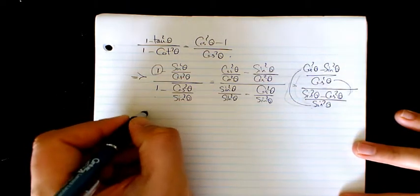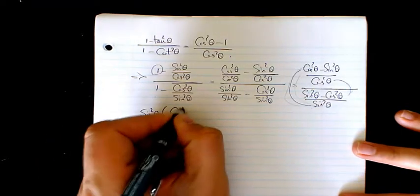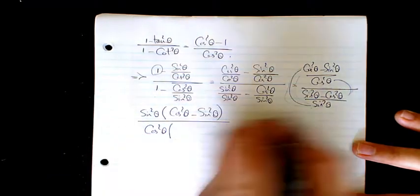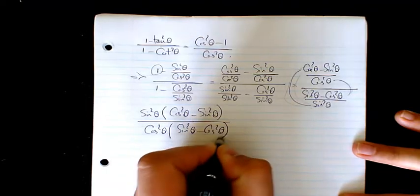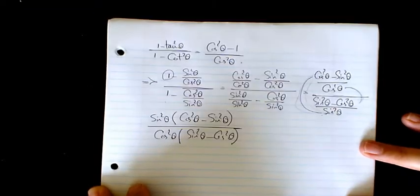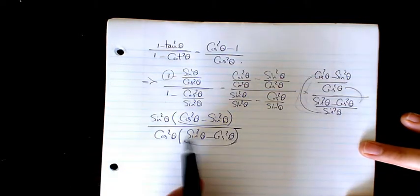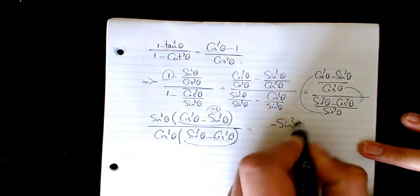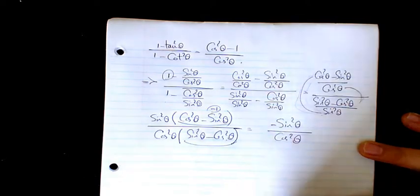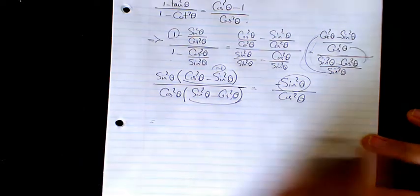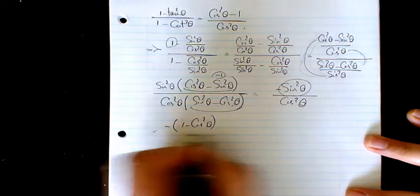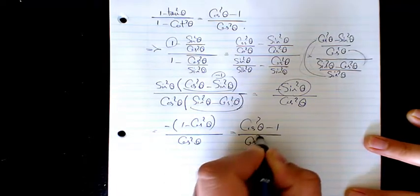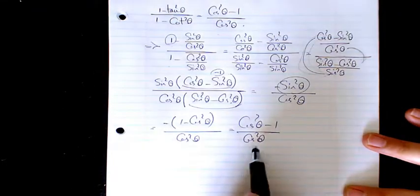So it will be sine squared theta times cosine squared theta, minus sine squared theta, divided by cosine squared theta times (sine squared theta minus cosine squared theta). These two factors are very similar to each other; if I cancel them, I will have negative one. So it becomes negative sine squared theta divided by cosine squared theta. Since sine squared theta equals 1 minus cosine squared theta, substituting gives (cosine squared theta minus 1) divided by cosine squared theta — which is exactly what we have on top.